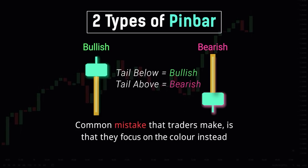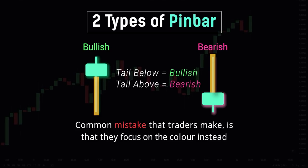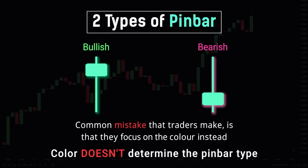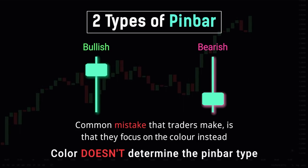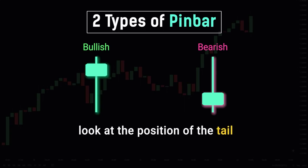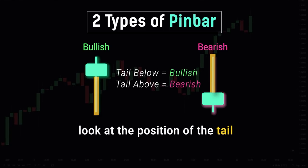A common mistake that I see most traders make is that they focus on the color of the pin bar instead. Remember, the color of the pin bar does not determine if it is bullish or bearish. A bullish pin bar can be either green or red, and a bearish pin bar can also be either green or red. The only thing that differentiates between the two is the position of the tail itself.